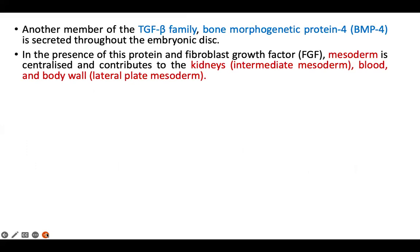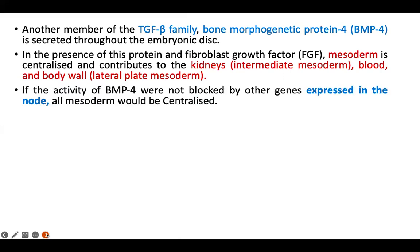In the presence of BMP4 along with fibroblast growth factor (FGF), mesoderm is lateralized and contributes to the kidney. Kidney formation occurs from intermediate mesoderm, and blood and body wall form from lateral plate mesoderm. If the activity of BMP4 were not blocked by other genes expressed in the node, all mesoderm would be centralized and ventralized.